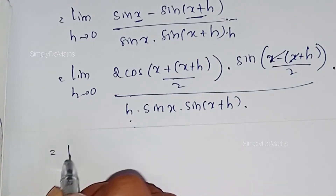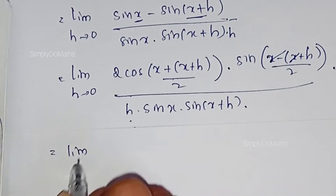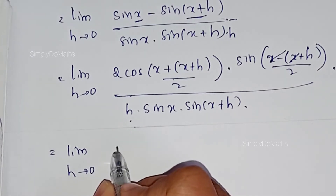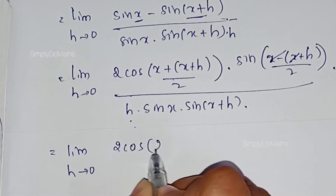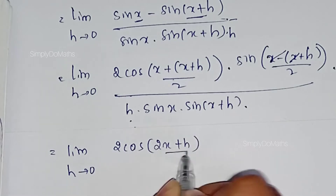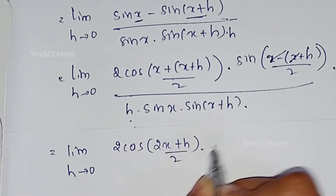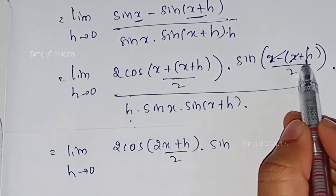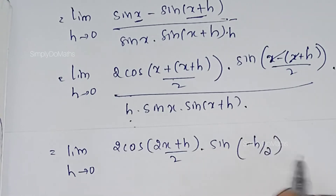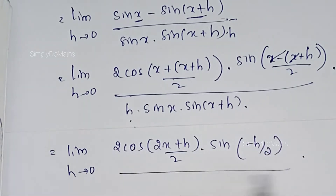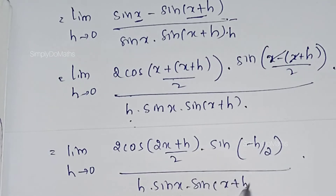This is equal to: limit as h tending to 0 of 2 cos((2x+h)/2) · sin(−h/2), divided by h · sin x · sin(x+h).